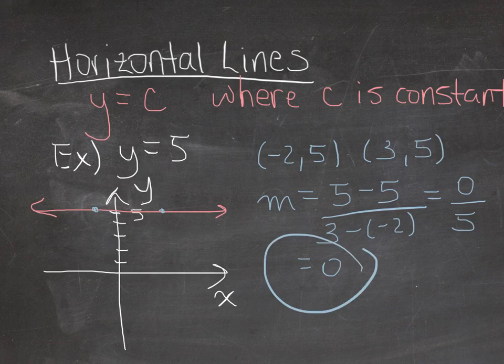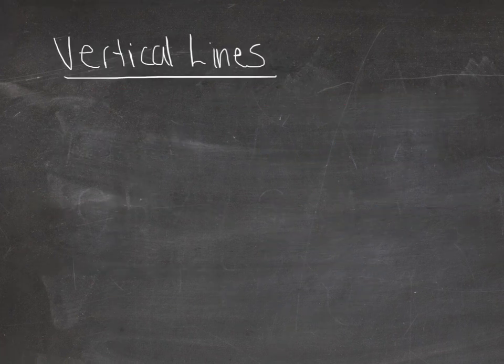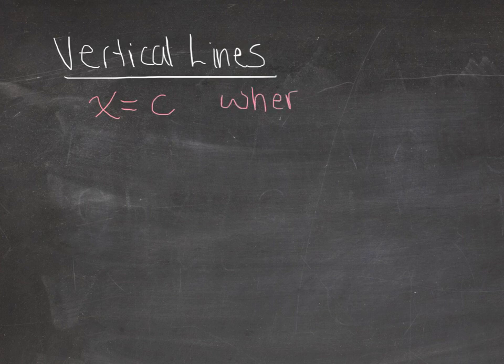So now let's look at vertical lines. So a vertical line is when you have x equal to some constant, where c is a constant.